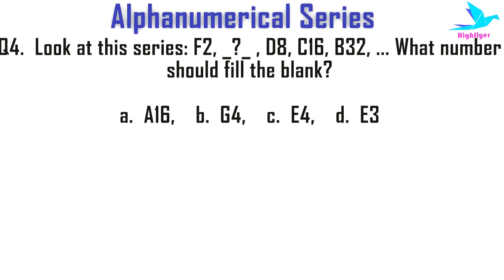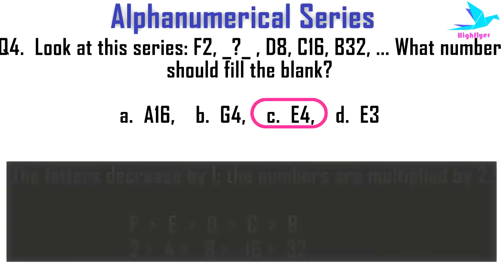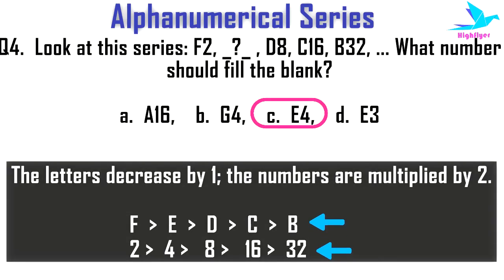Next example: look at the series F2, __, D8, C16, B32 — what number should fill the blank? The options are A16, G4, E4, or E3. The right option is C: E4. This is an alphanumerical series with one alphabet and one number as the single component of the series. The letters decrease by 1 and the numbers are multiplied by 2.